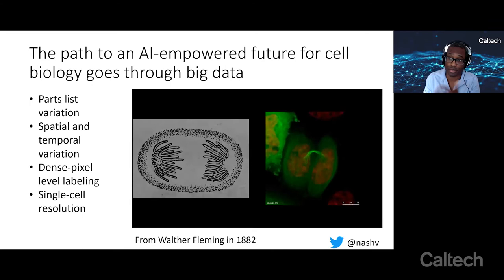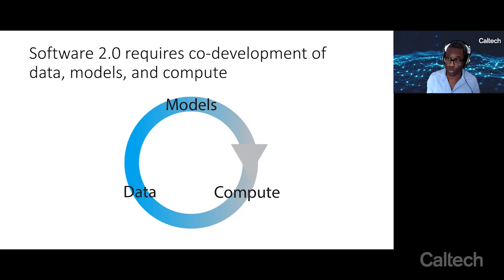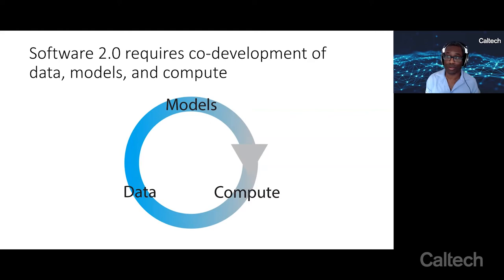These data challenges are quite substantial and are the focus of this talk. In addition to data challenges, there are challenges in the model space and in the computational infrastructure space. The term Software 2.0 calls attention to all of these challenges. If you want to develop machine learning systems that can be used on real biological data sets in real time, you need to look at all three areas — the data sets that power the models, what the models themselves look like, and the computational systems for deploying them. Folks need to be working on all three simultaneously in an integrated fashion.